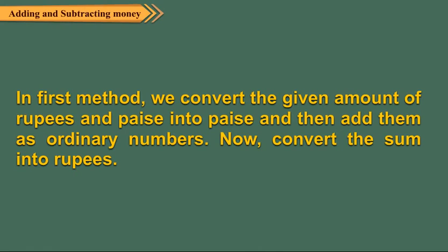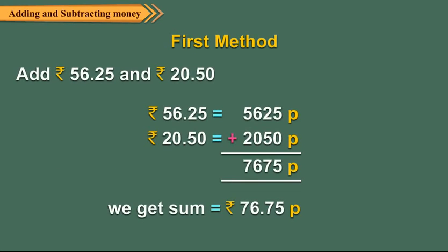In the first method, we convert the given amount of rupees and paise into paise and then add them up as ordinary numbers. Now convert the sum into rupees. Look at the example shown here.